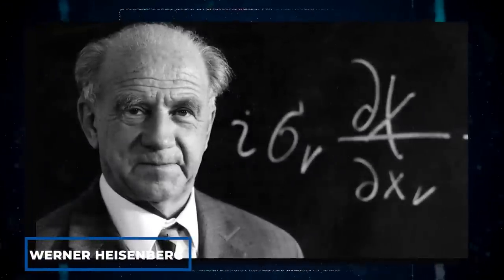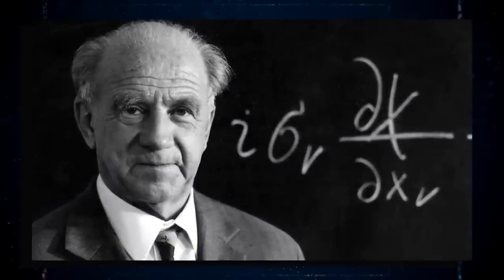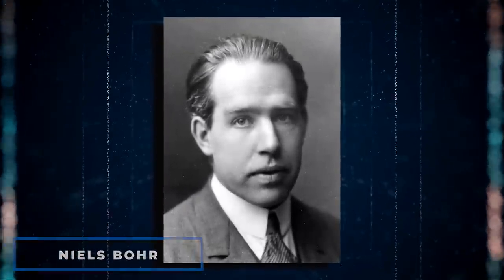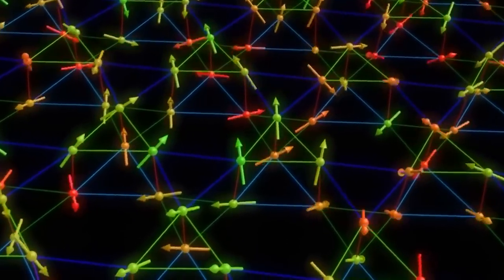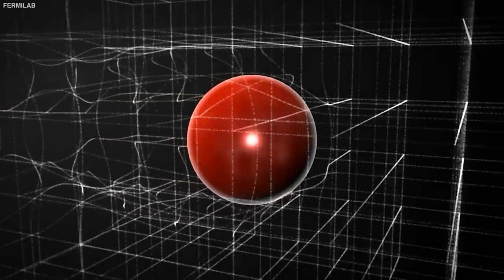Scientists Werner Heisenberg proposed that humans can change the behavior of quantum matter just by observing it. Another physicist, Niels Bohr, concurred and went so far as to argue that quantum particles exist in all conceivable states at the same time and that when we watch them, our perception changes their behavior, causing them to choose one state at that point in time.